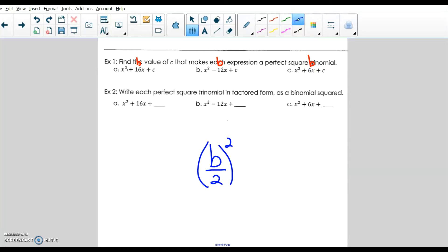So we are supposed to take that number, take half of it, and square it. So 16 divided by 2 is 8. 8 squared gives us 64. So that 64 is the C value that creates this trinomial to be a perfect square trinomial.